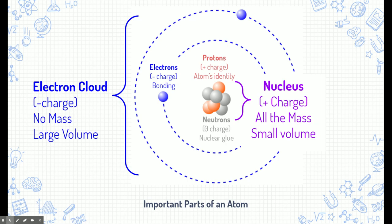Also in the nucleus are neutrons. Neutrons have zero charge — we say that they're neutral, which is where the word neutron comes from. Neutrons do have a task though: they provide the nuclear glue, they hold the atom's nucleus together and keep those protons together. Now the nucleus itself, because of the protons, is positively charged. The nucleus is also where all of the mass of an atom is stored. Even though the nucleus is the smallest part of an atom, it doesn't really take up much space — it has a very small volume.